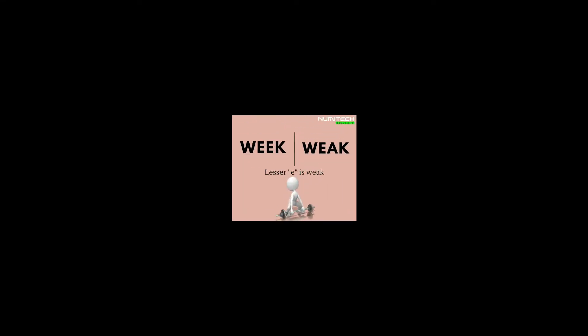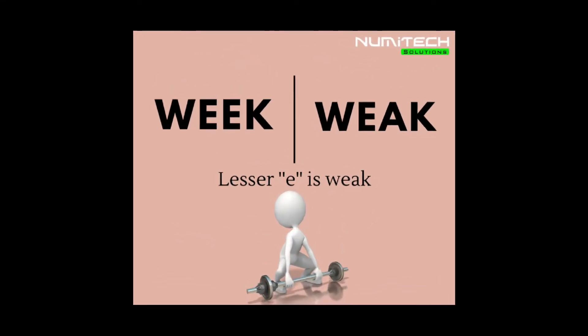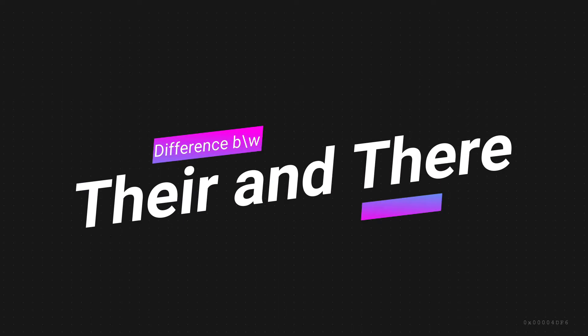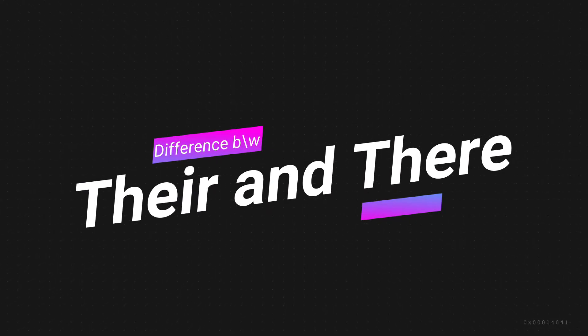Just remember that 'weak' has fewer E's because it is not consuming as much ease as is necessary to get strong — so it is 'weak,' spelled W-E-A-K. Next, we are going to discuss the difference between 'their' and 'there.'